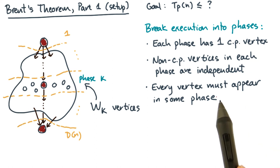By this third condition, which says that every vertex has to appear in exactly one phase, what does that imply? It tells us if we add up the w_k's across all the phases, we should get the total number of vertices. That is, the sum of w_k for k from one to d should be w.